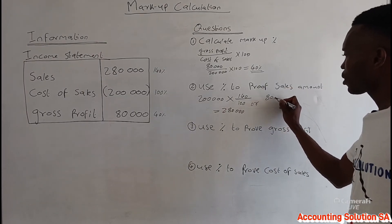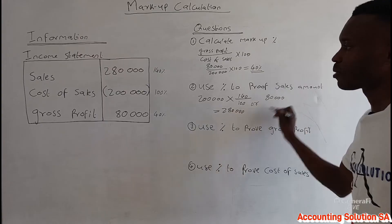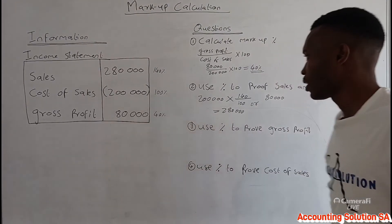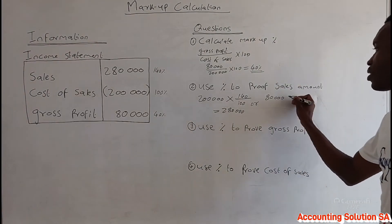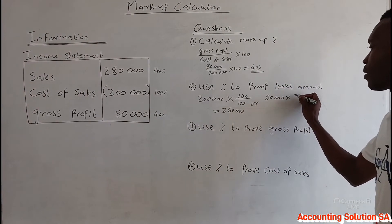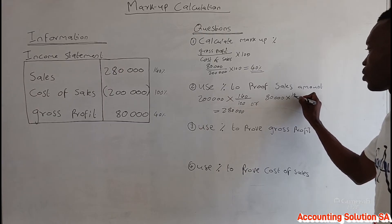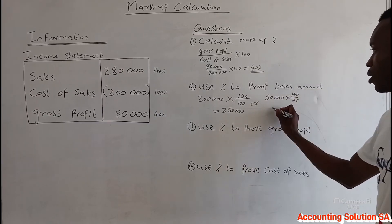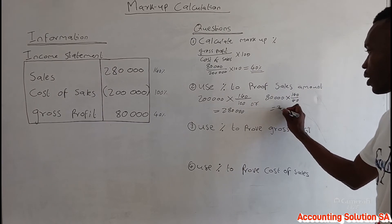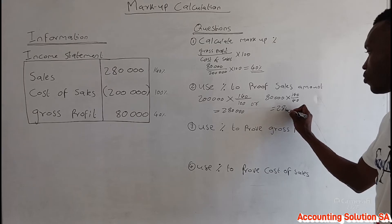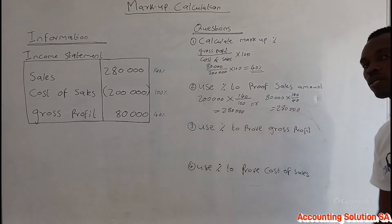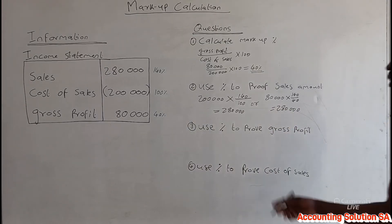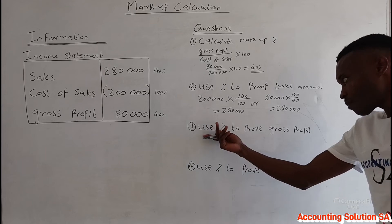Alternatively, if you have only been given gross profit, you can say 80,000 multiplied by 140 over 40, and you will still get an amount of 280,000.